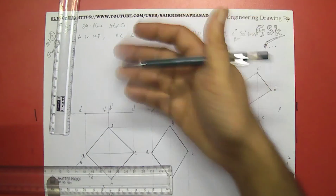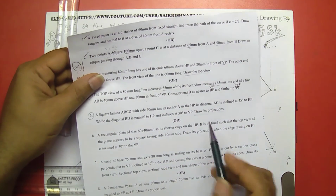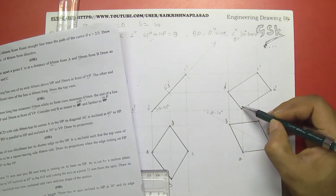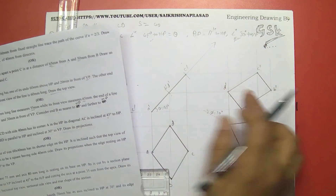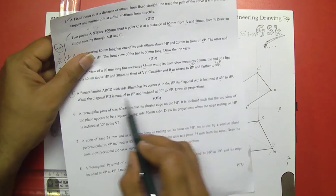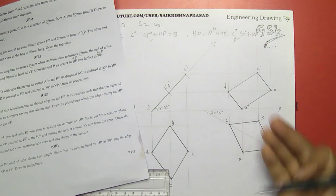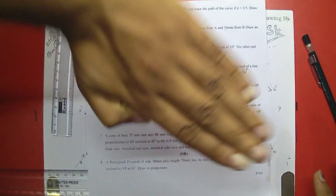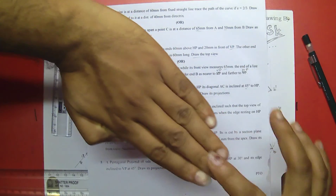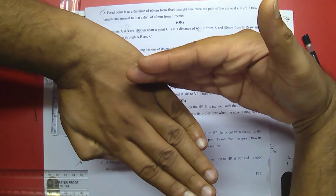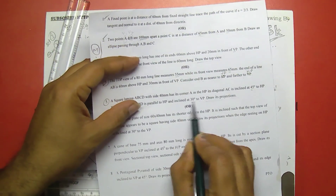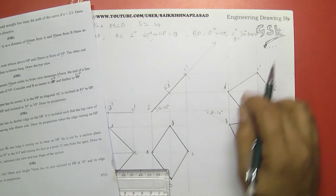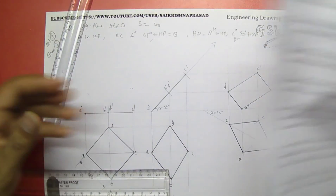Coming back to verify the conditions in the question: diagonal AC is 45 degrees inclined to the HP — see here, AC diagonal is 45 degrees to the HP, same figure is reproduced. AC is 45 degrees to the HP and BD is parallel to the HP — see here, BD is parallel to the HP, meaning the height from the HP is the same. The plane is inclined to the VP at 30 degrees, and AC is inclined at 45 degrees. By this we have finished the fifth problem.